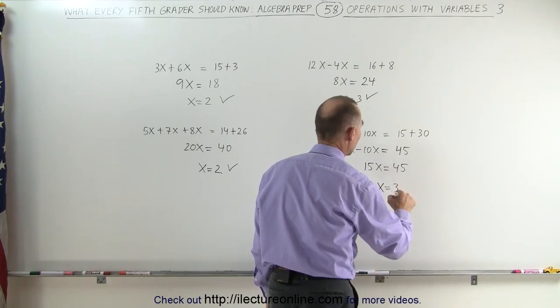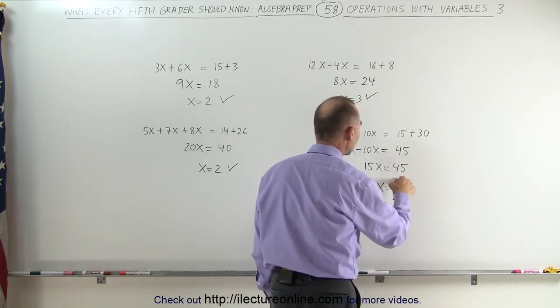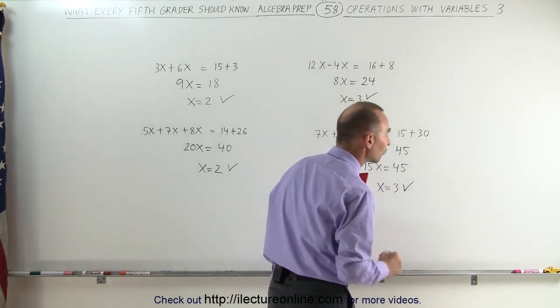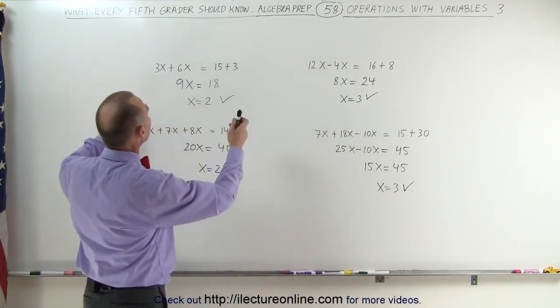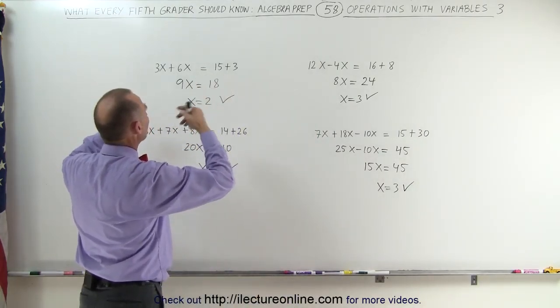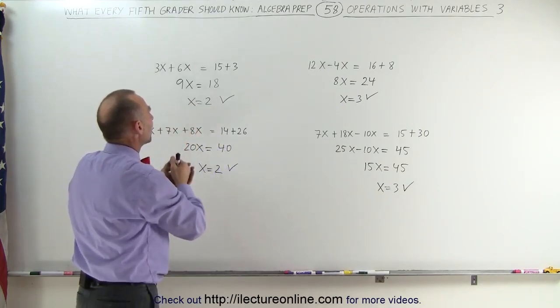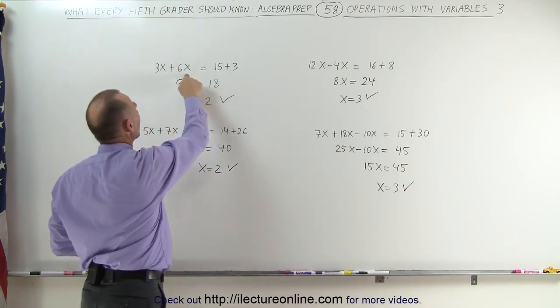So now you ask yourself the question, what number times 15 gives me 45? And then you realize 3 does. If x is equal to 3, 3 times 15 is 45, so this is the correct answer.